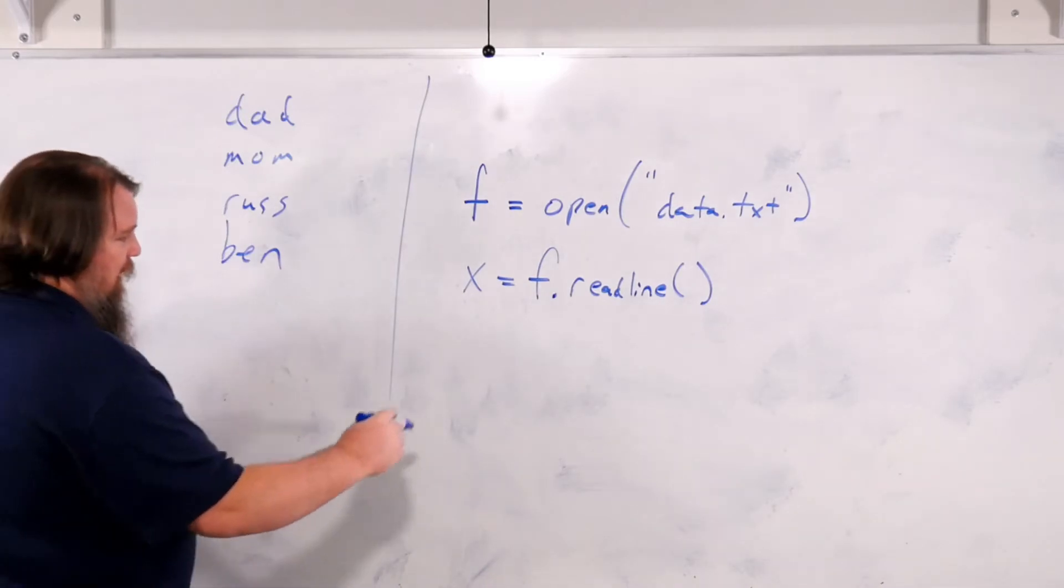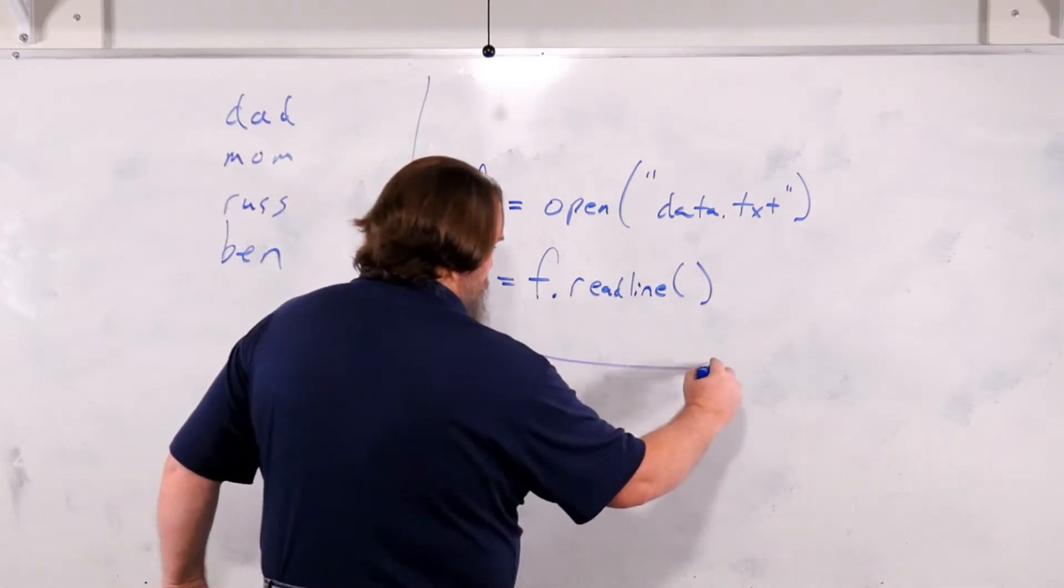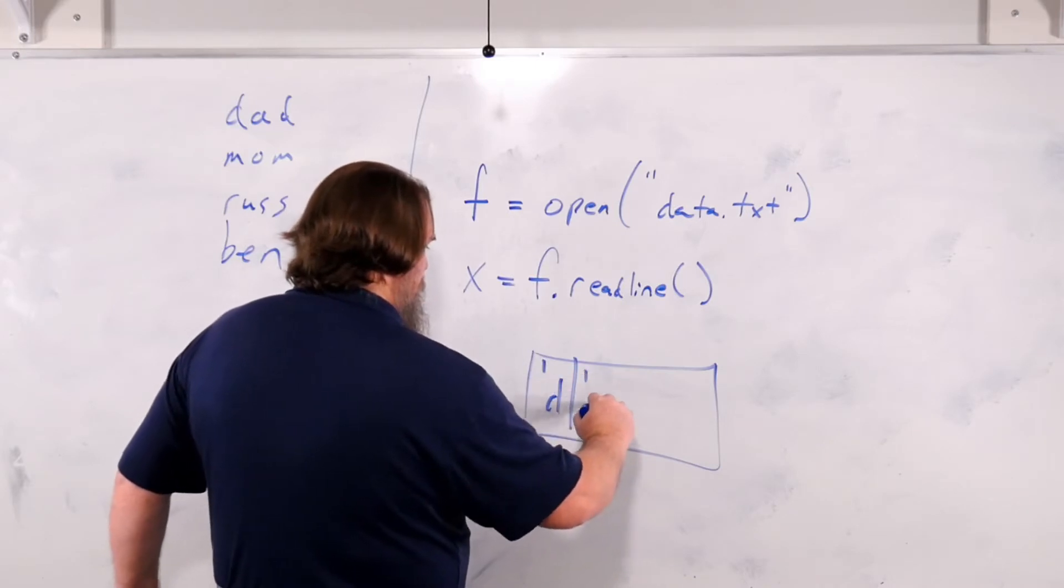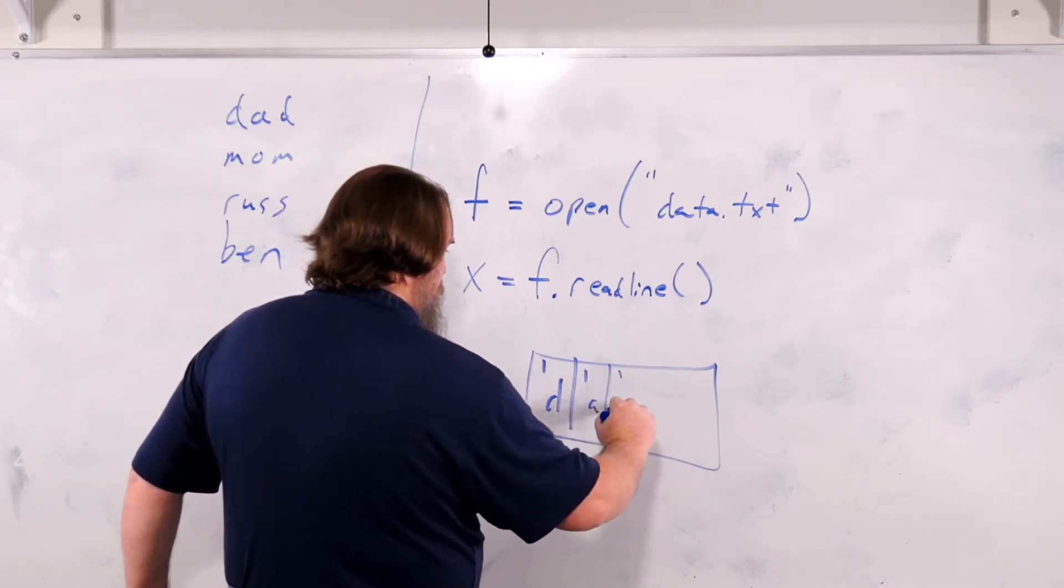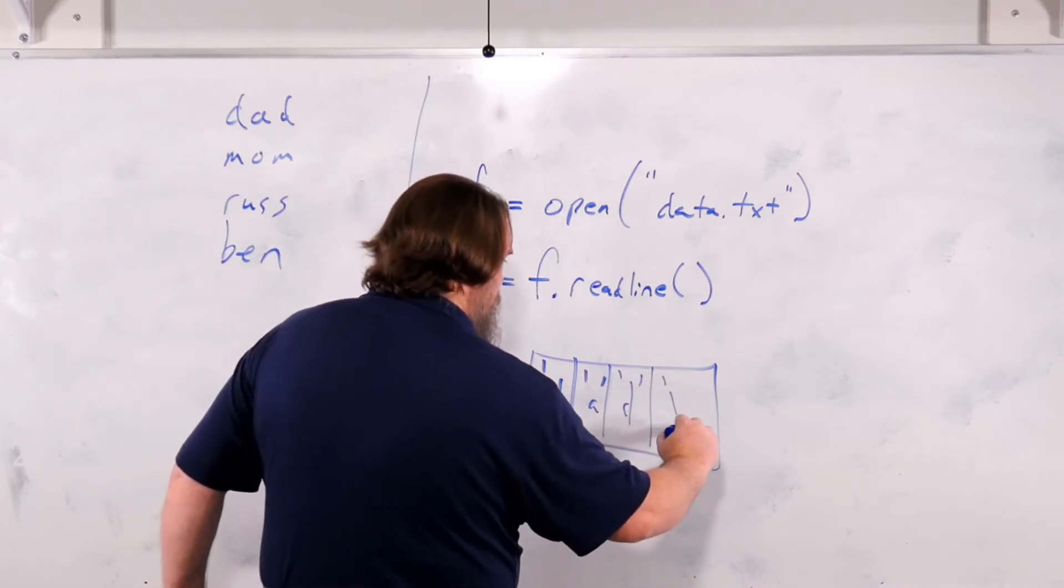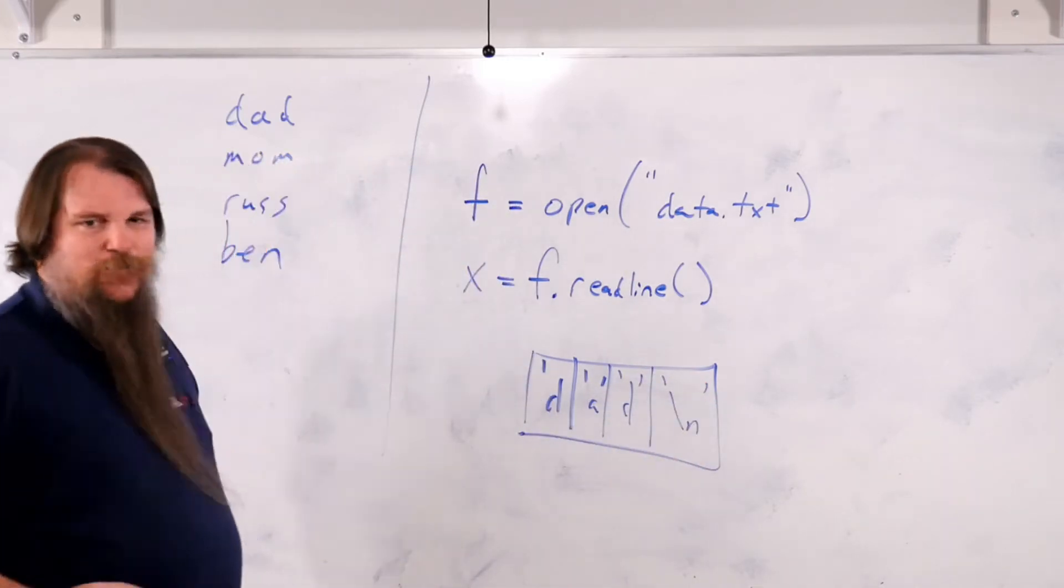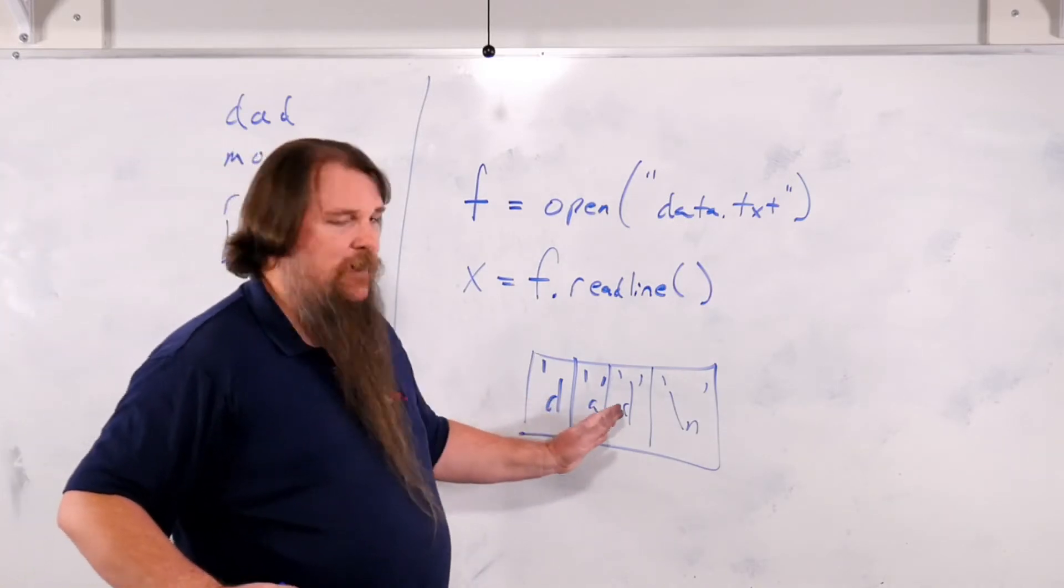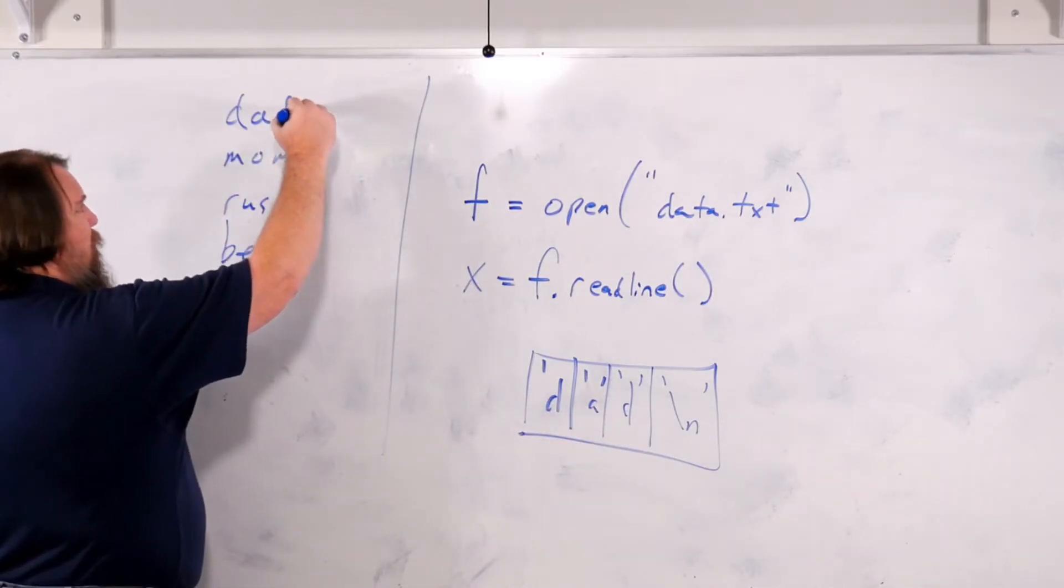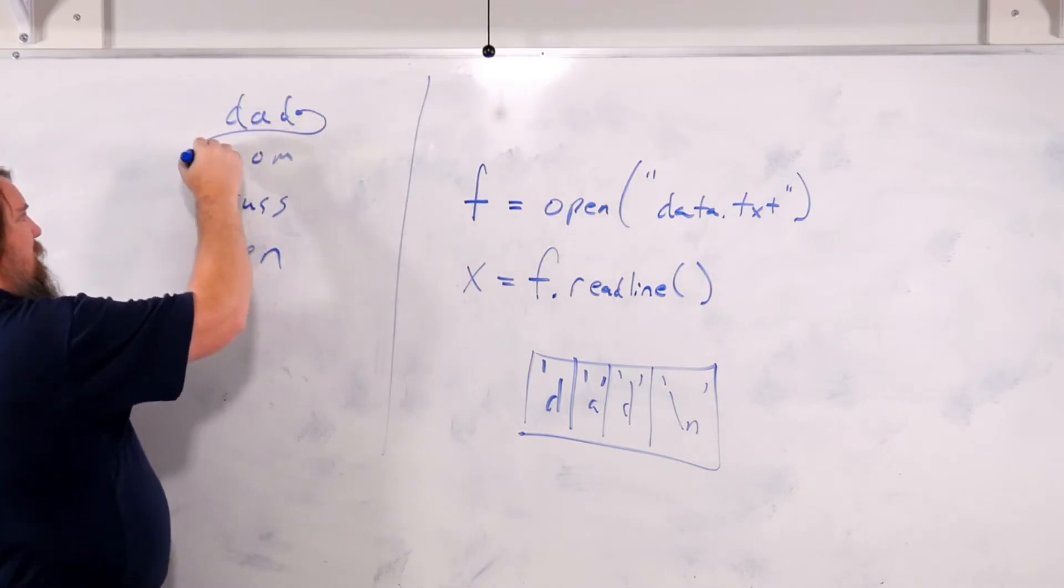It's going to be the string that looks like this. It has a D, then it has an A, then it has another D, and then it has the new line character. We'll talk more about the new line character in a future video, but the new line character is basically the one that takes you from this line down to the next.